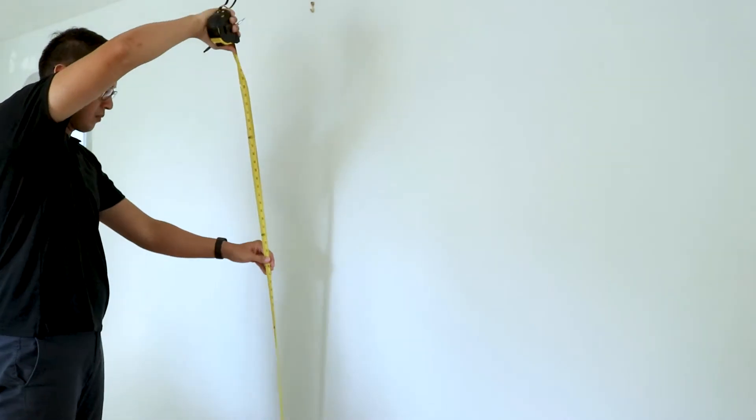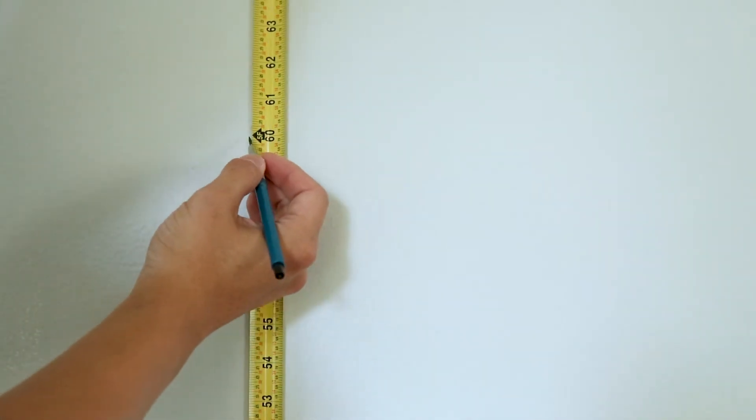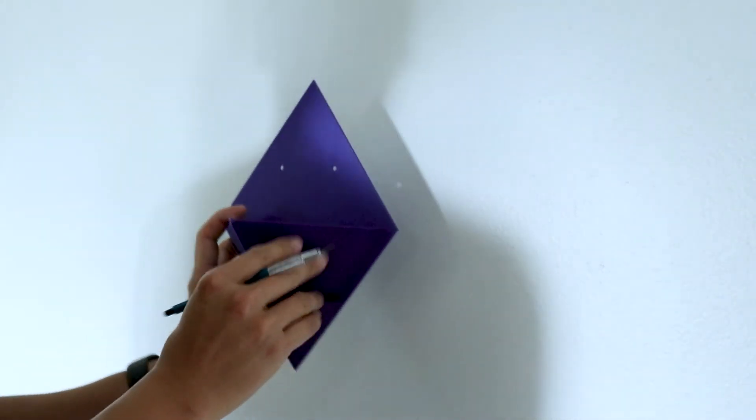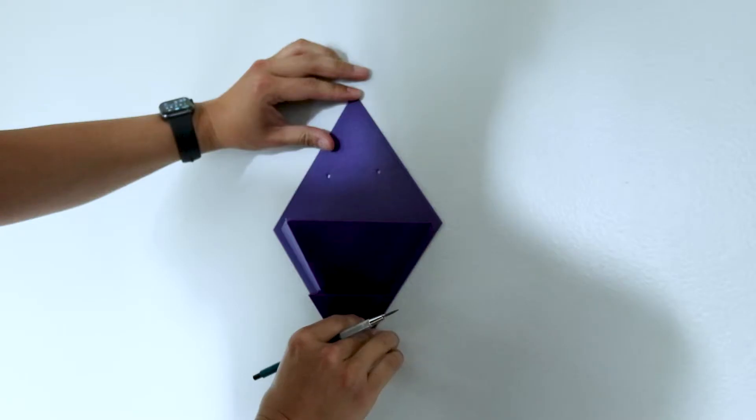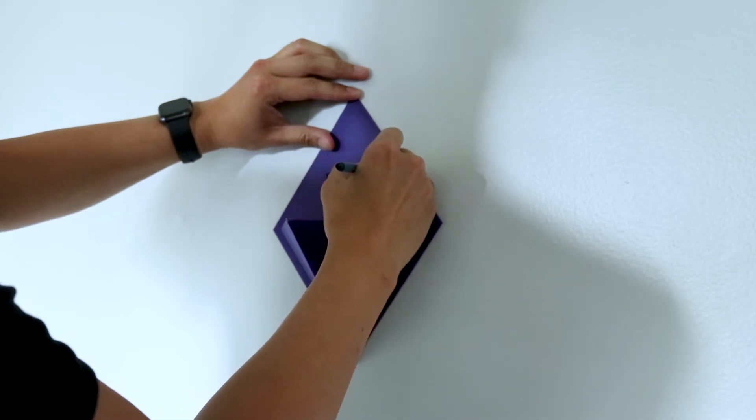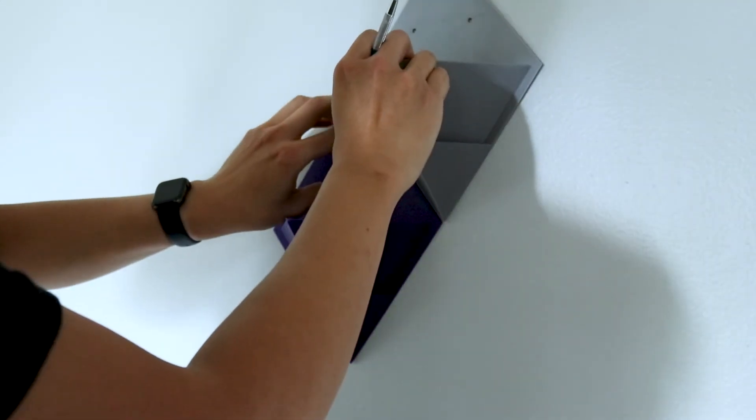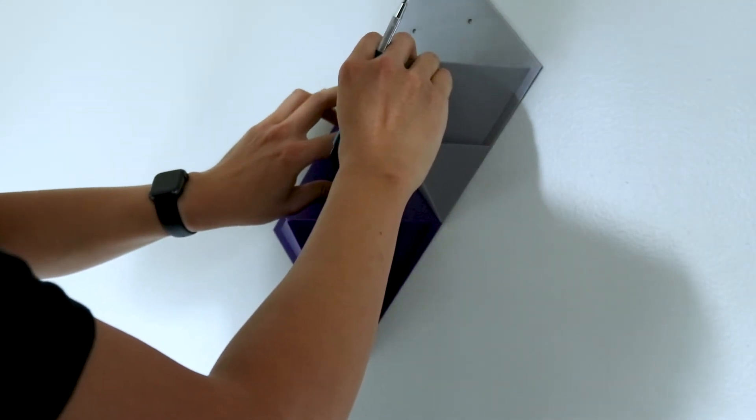Once the prints were complete, I brought them over to the wall where they'll be installed and measured a general height of 5 feet for the first planter. The idea was to keep them high enough so my dog can't reach them, but low enough so the plants could be watered and seen. Using a pencil, I mark the locations where screws will be installed and begin screwing in drywall anchors.